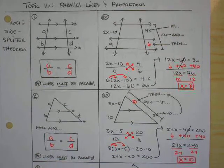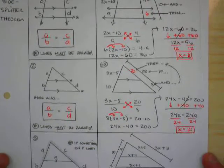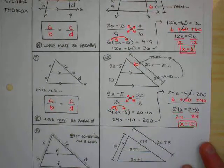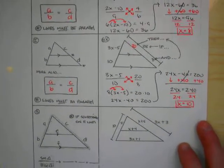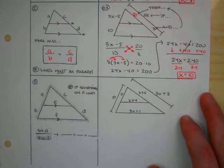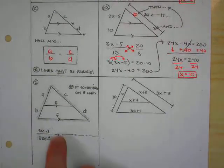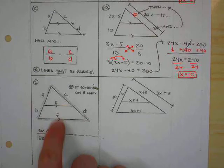These are two examples right here of ways that we can use the side splitter theorem to figure out missing side lengths or how sides are related to one another. Now there's one more way that we're going to talk about, at least as part of this part of our notes. And this particular instance that we're going to discuss next is what we do when we have something written on every part of our triangle.